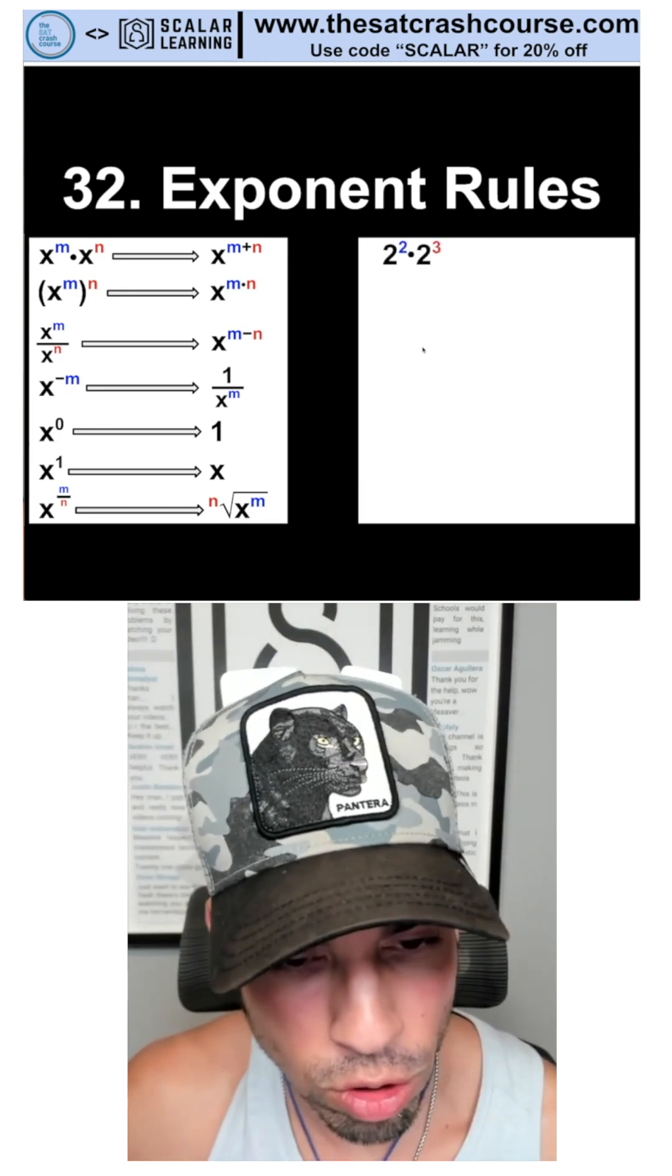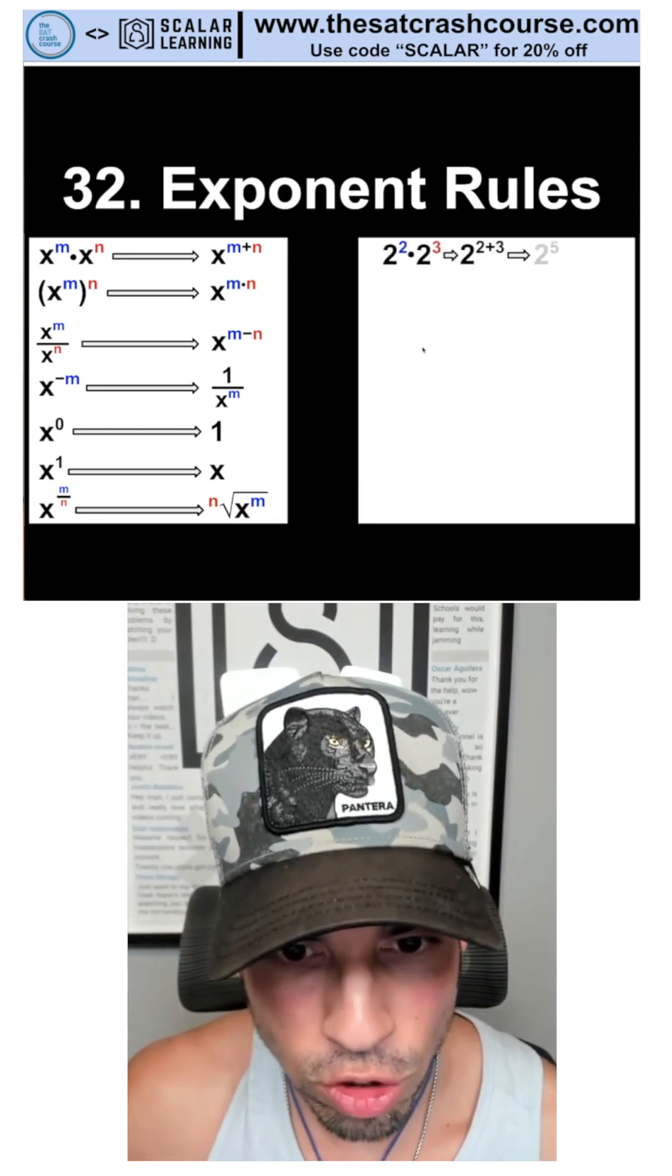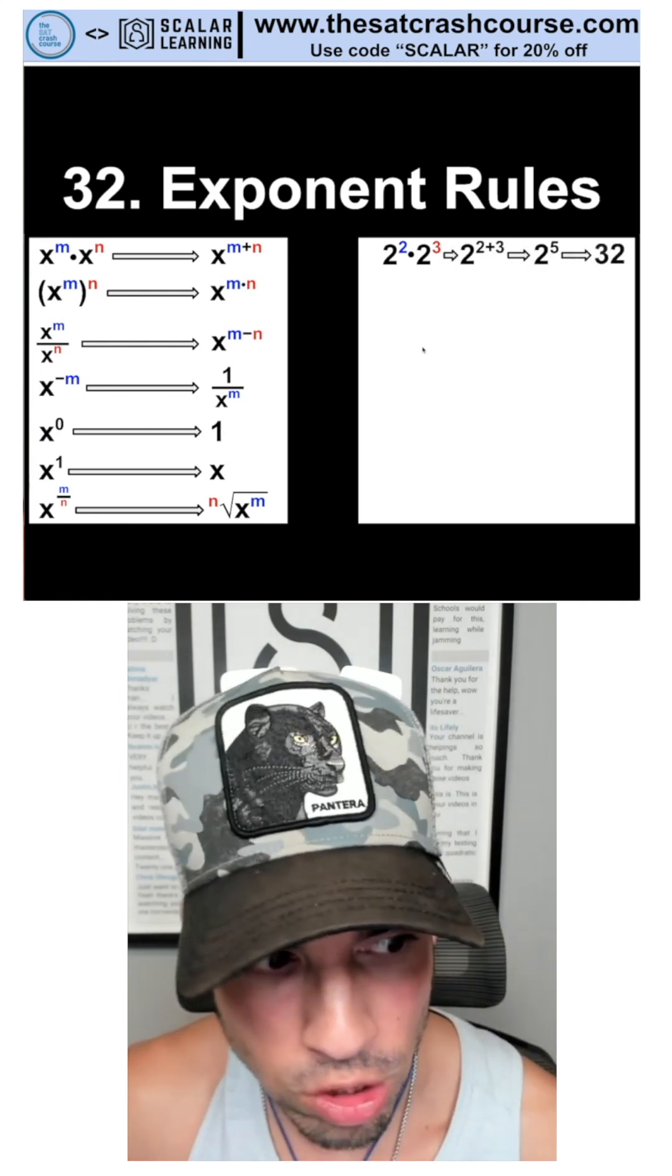For example, two squared times two to the third, we add the exponents and we get two to the fifth, which is 32.